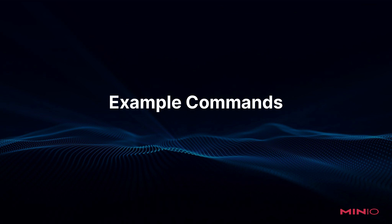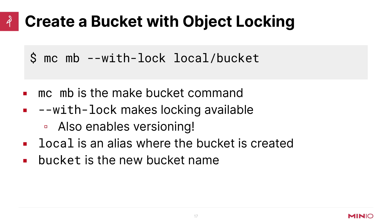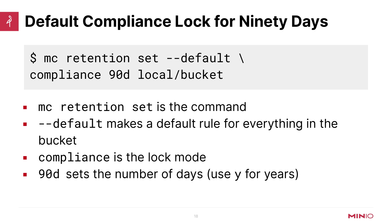Let's take a look at some example commands. To make a bucket with object locking available, use mc mb --with-lock, which is the flag that makes locking available and also automatically enables versioning. For example: mc mb --with-lock local/bucket. To set a compliance lock as default for the bucket, use mc retention set --default compliance 90D local/bucket. The --default flag makes it the default rule for everything in the bucket, so any new object uploaded will be compliance locked for 90 days. You can also use governance as the lock mode, and Y for years if preferred.